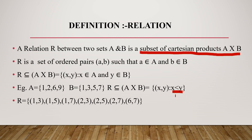We have to choose those elements — ordered pairs from A cross B — where the first element is less than the second element.